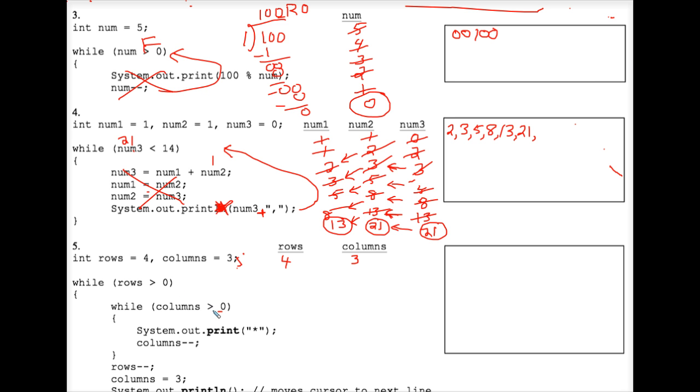Rows, greater than 0. Columns, greater than 0. System out, print, star. So we get a little star. Great. Columns, minus, minuses to 2. Then we hit this closing curly brace, which loops us back up to the matching top of that while loop. Columns is still greater than 0, so we system out, print, another star. Be looking for a pattern, because the pattern's going to become clear real soon. Columns, minus, minuses to 1. We loop back up to the top. We print another star.